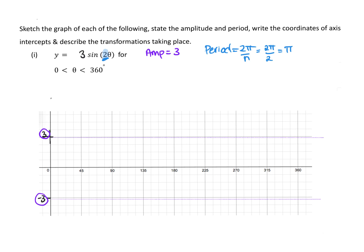It's much easier if we find the intervals as well. The interval is the period divided by 4. In this case, the period was π divided by 4, so we're going to see those points happen at every quarter of π, which is π/4.